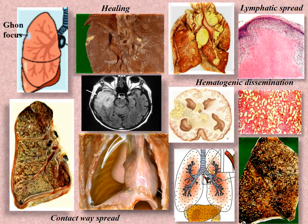During healing, the exudative process is first alternated by proliferative reaction, then replaced by connective tissue with further calcification, leaving a fibrotic small Ghon focus — seen as a whitish area in the picture. Proceeding calcification results in metaplastic bone formation and ossification at this site.